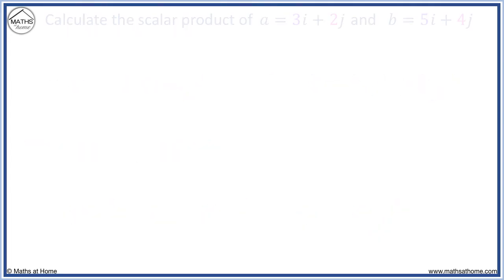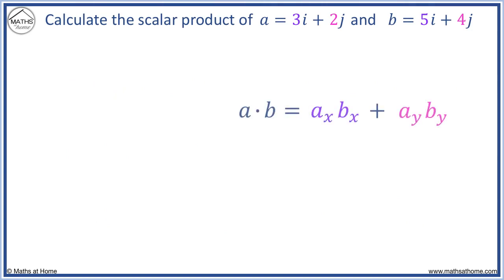For example, calculate the scalar product of A and B. We use the formula where AX equals 3, AY equals 2, BX equals 5, and BY equals 4. The dot product becomes 3 times 5 plus 2 times 4, which equals 15 plus 8, which equals 23.